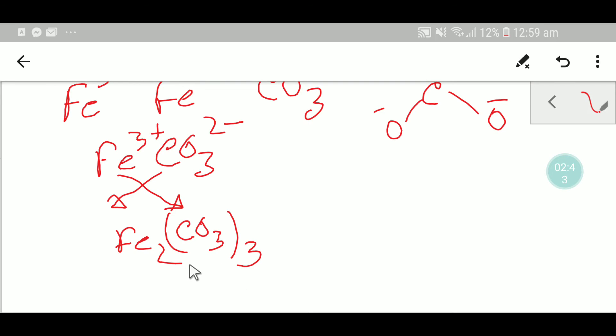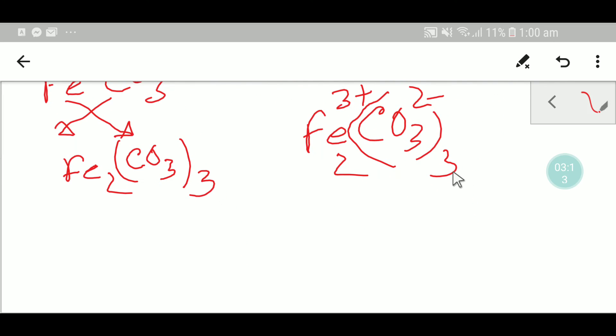However, you can simply write this formula like this. You have to balance the positive charges and negative charges. So here we have 3+, so if I place two here, then my positive charges will be six. And we need six minus, so I will write three here. Three carbonates means six charges - six minus charges. So you can easily write this formula: ferric carbonate Fe2(CO3)3.